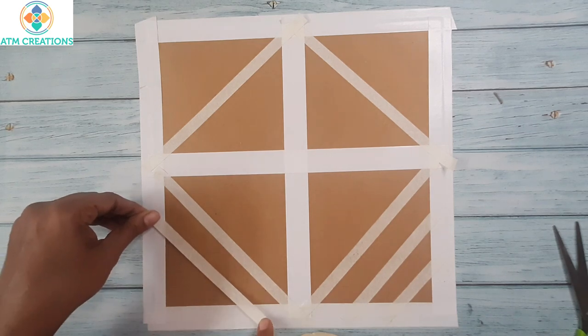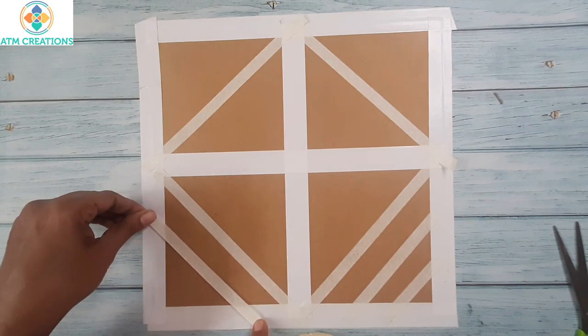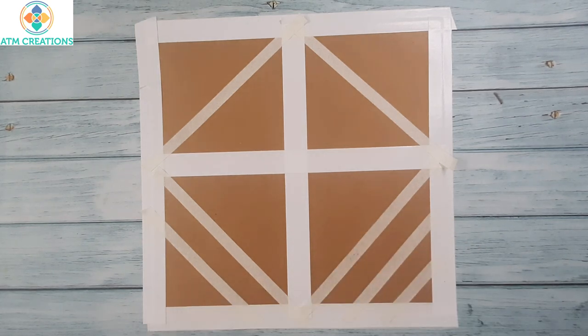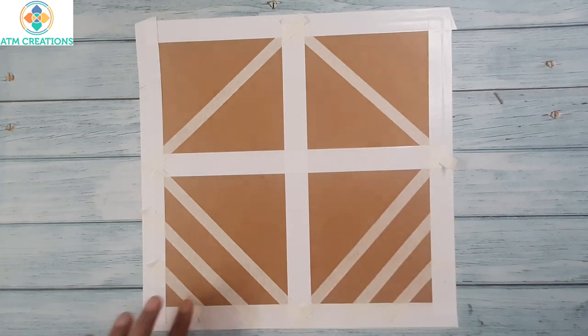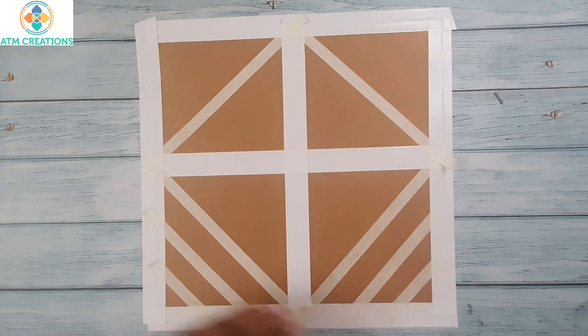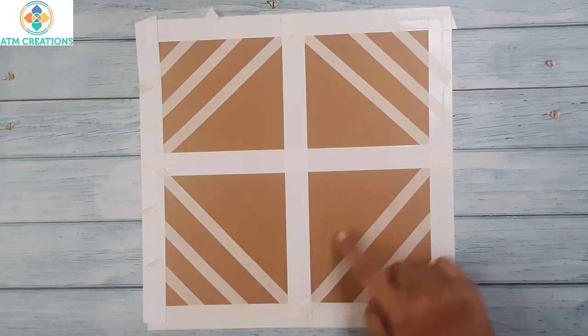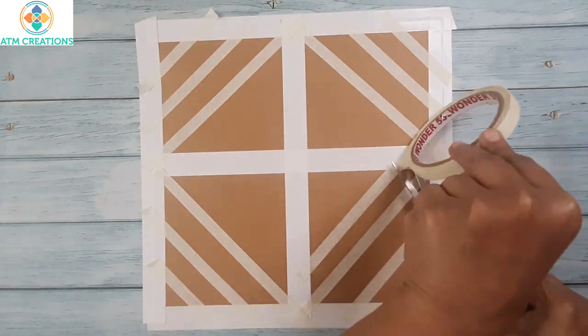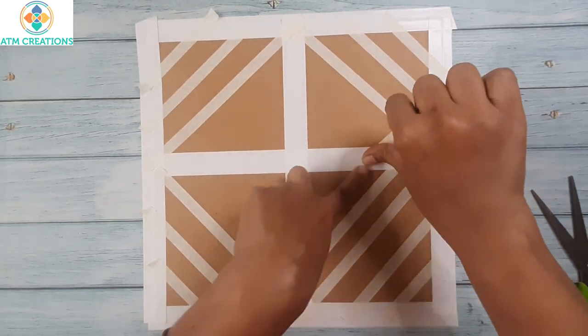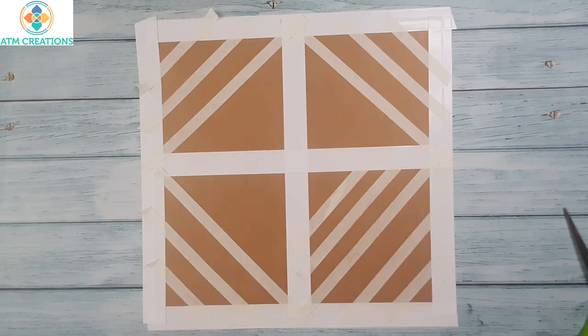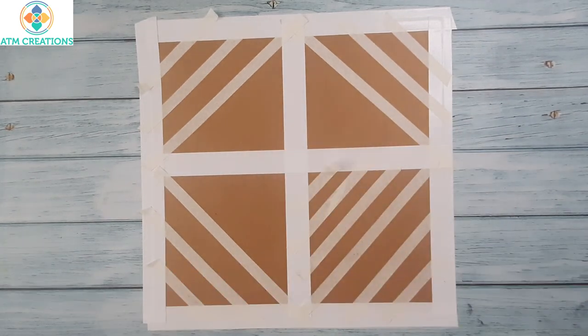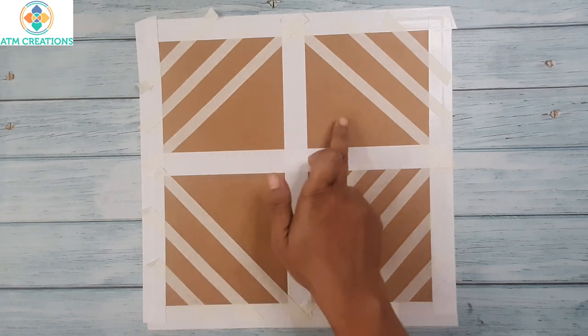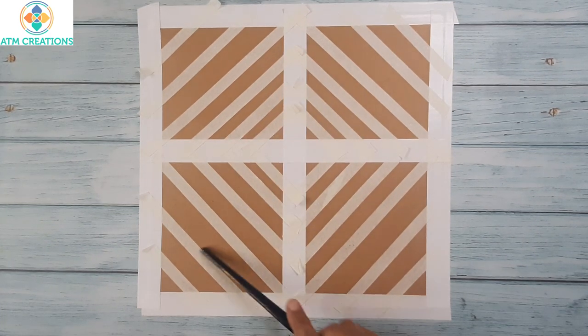Of course, when you place the masking tape you need to be a little slow. Now I'll do the same thing in the other part of the squares too. Now I'll place some more masking tape here. So similarly, I'll place masking tapes in the other portions of these squares too.